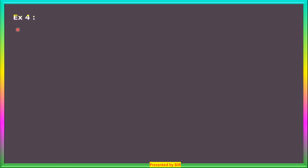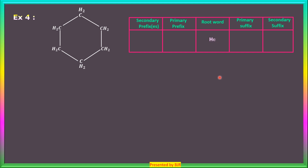Example 4: In this ring, six carbon atoms are present, so the root word is 'hex'. Only carbon-carbon single bonds are there, so the primary suffix is 'ane'. All these carbon atoms are forming a closed chain, i.e., a ring structure, and the primary prefix is 'cyclo'. The name of this alicyclic compound is cyclohexane.